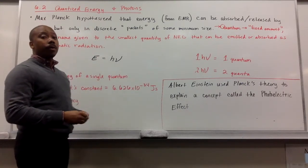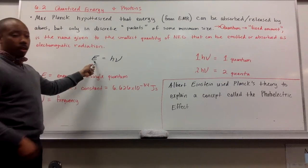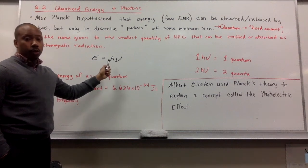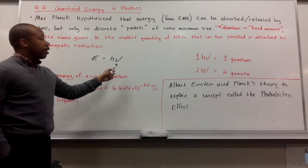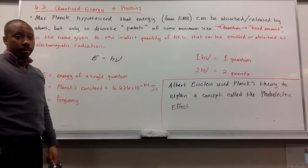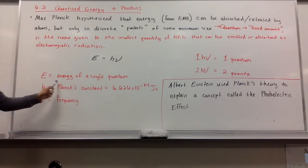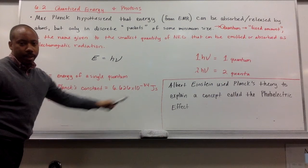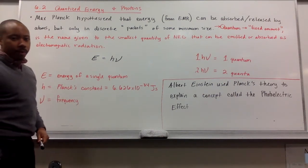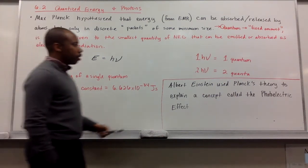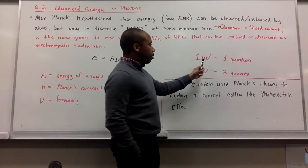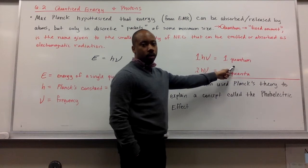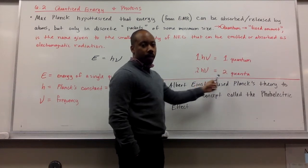We can calculate this energy using this equation. This quantum energy is equal to H, which is Planck's constant, times our frequency. E is the energy of a single quantum. Planck's constant times frequency equals 1 quantum. If we have 2 of that, it's 2 quanta.